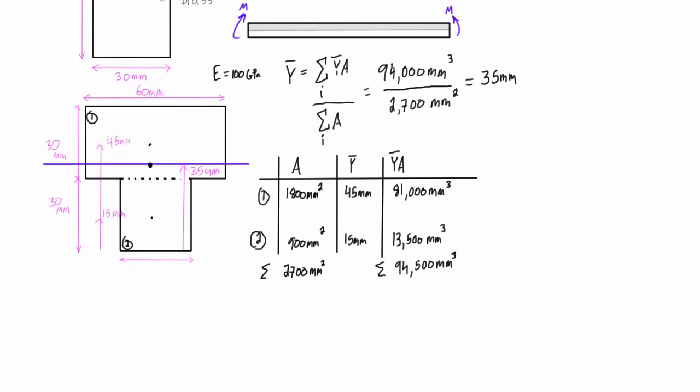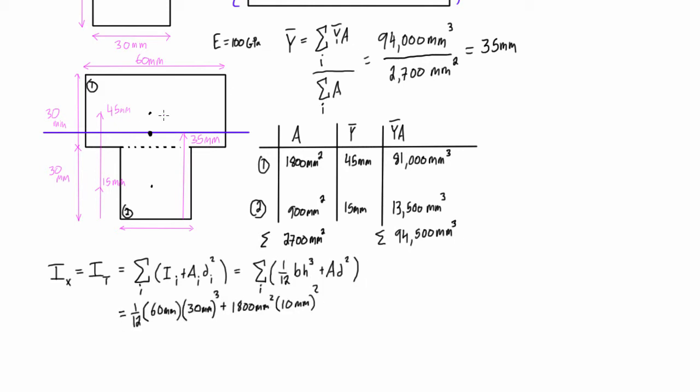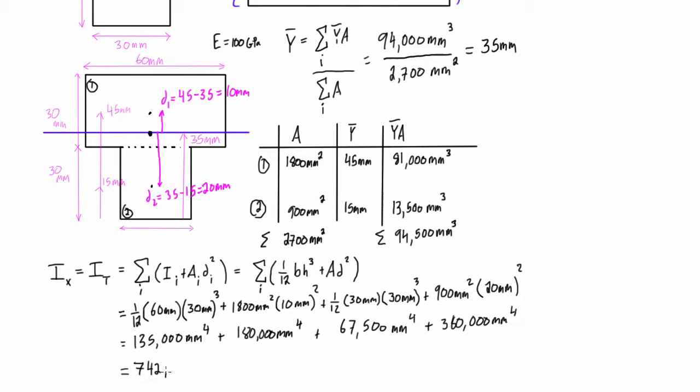So we're going to be needing that for the next part where we're calculating the moment of inertia for the transformed shape, or the centroidal moment of inertia about this axis here that passes through the centroid. And we're going to find that it is 742,500 millimeters to the power of 4, or 0.7425 times 10 to the minus 6 meters to the power of 4. And now that we have that, we can go and calculate the max stress that's developing in the brass section.